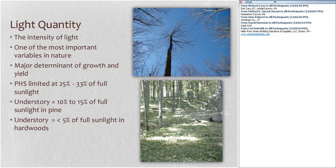Plants grow well and photosynthesize well at high levels of sunlight. Photosynthesis becomes limiting when you're below about a third of full sunlight. As plants have less access to sunlight, their rates of photosynthesis diminish. In the understory of a pine stand, plants have 10 to 15 percent of full sunlight. The understory in a hardwood stand is typically less than 5 percent of full sunlight. Species that survive in the understory will need the ability to tolerate those low levels.